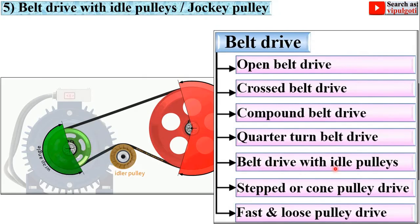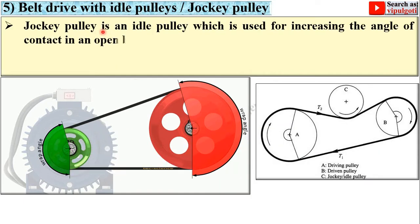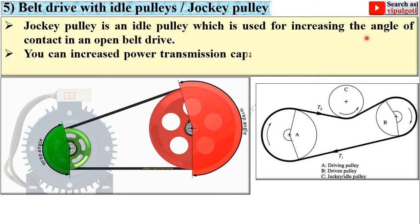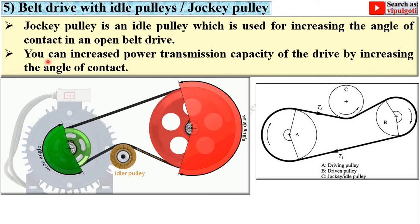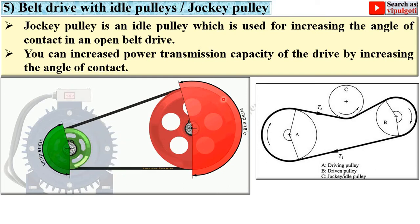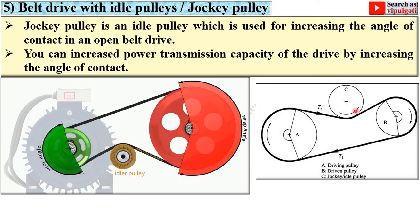Next: belt drive with idle pulleys. One idle pulley is used, but you can use more than one. It is sometimes known as a jockey pulley — a jockey pulley is an idle pulley used for increasing the angle of contact. By using the idle pulley you can increase the wrap angle, or contact angle, and thereby increase the power transmission capacity of the drive. Here, C is the jockey pulley or idle pulley.